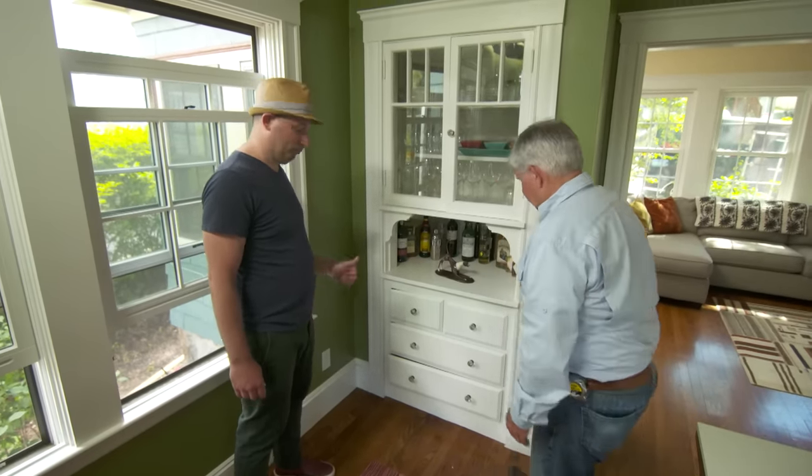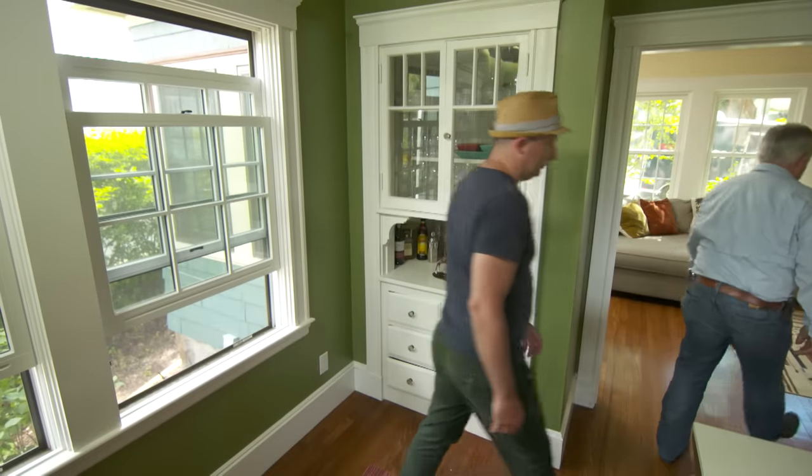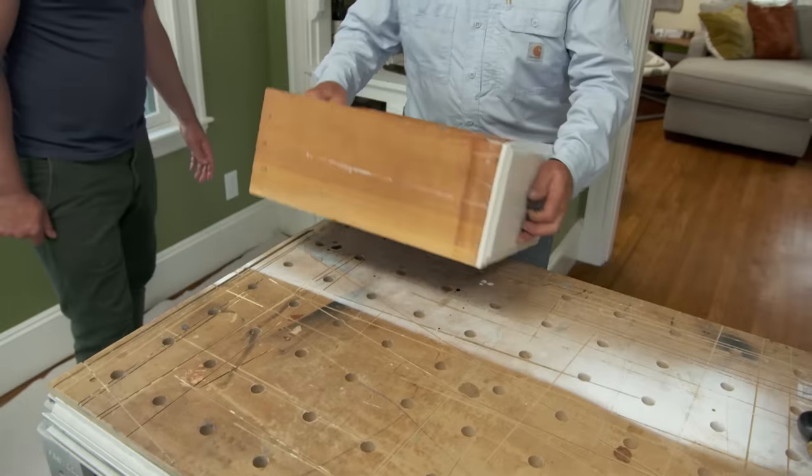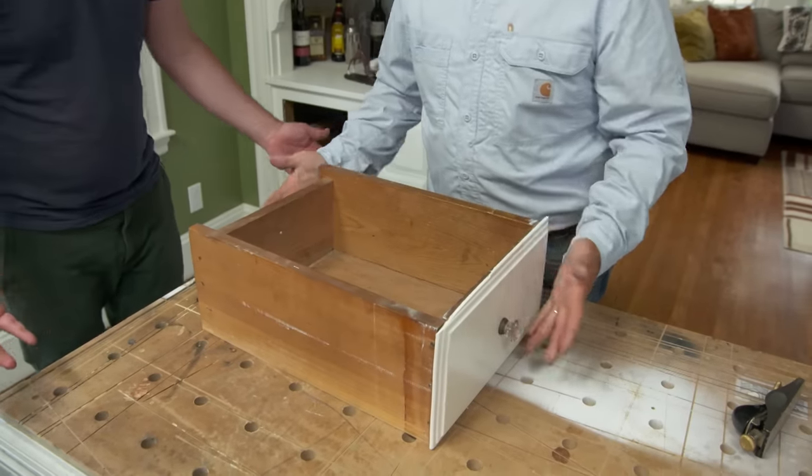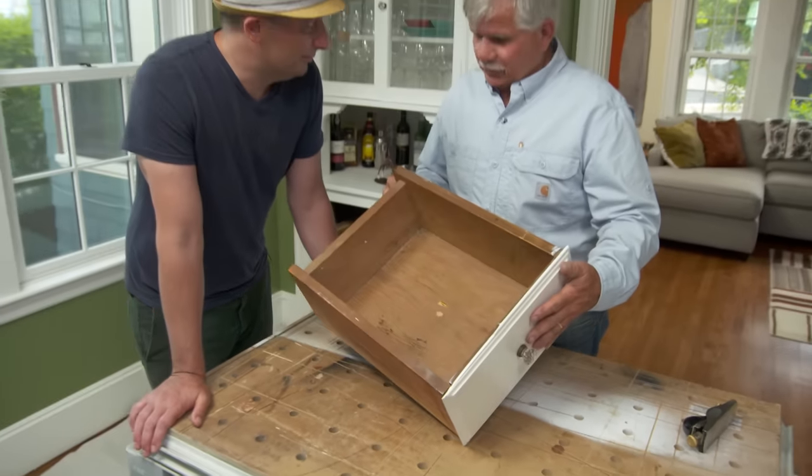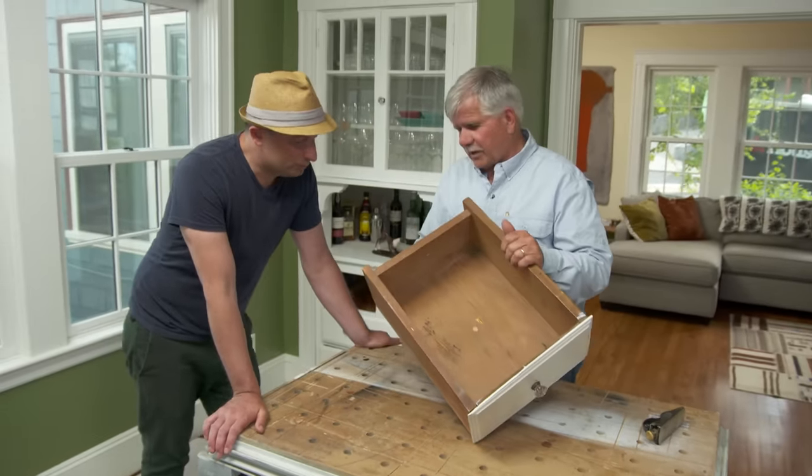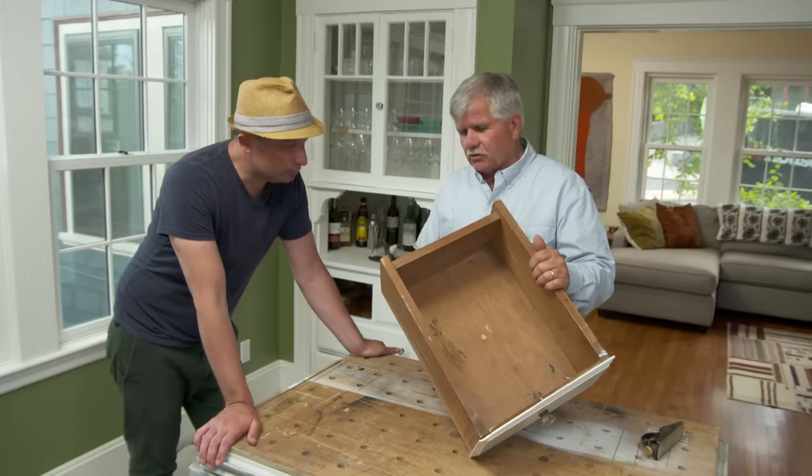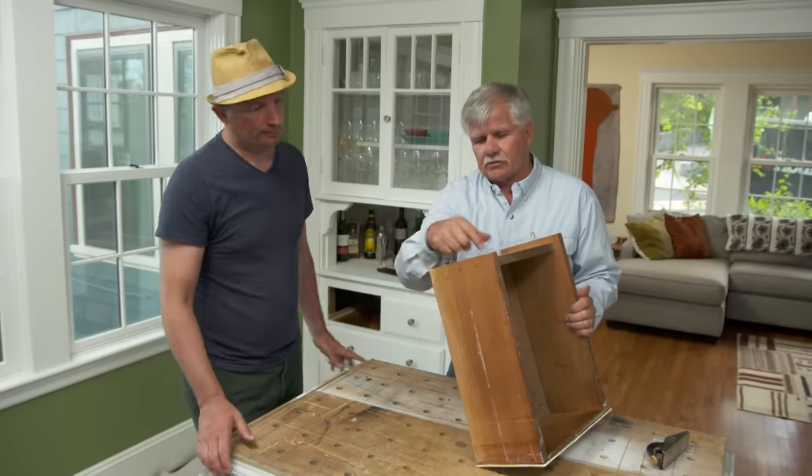All right, let's get some tools and we can get started. There's the first drawer right there. Wow, that's it, it's pretty simple. It's a butt joint in the back, all boards are probably cut with hand tools, and there's just nails right through to hold the back in place.